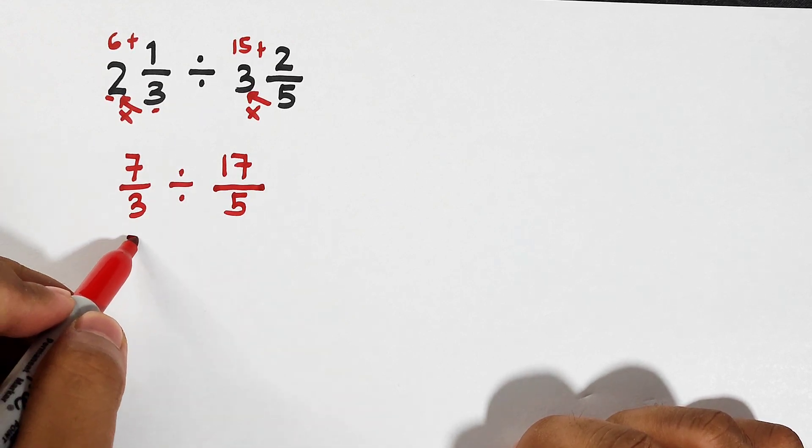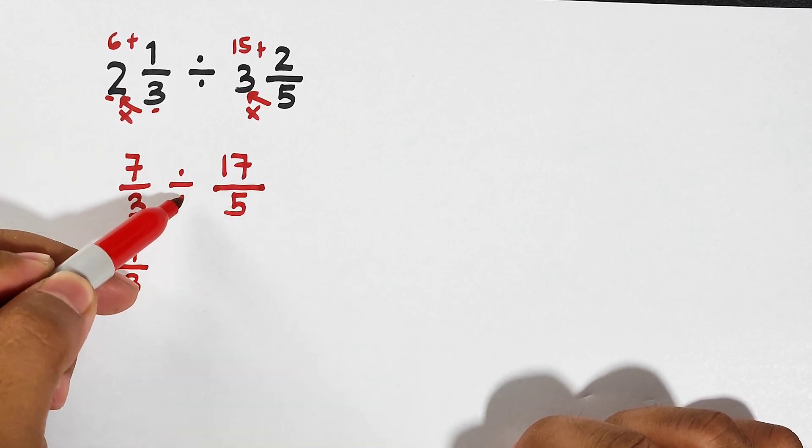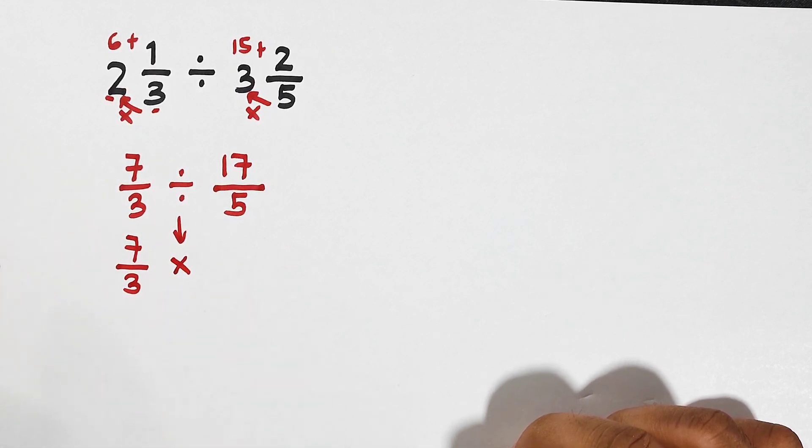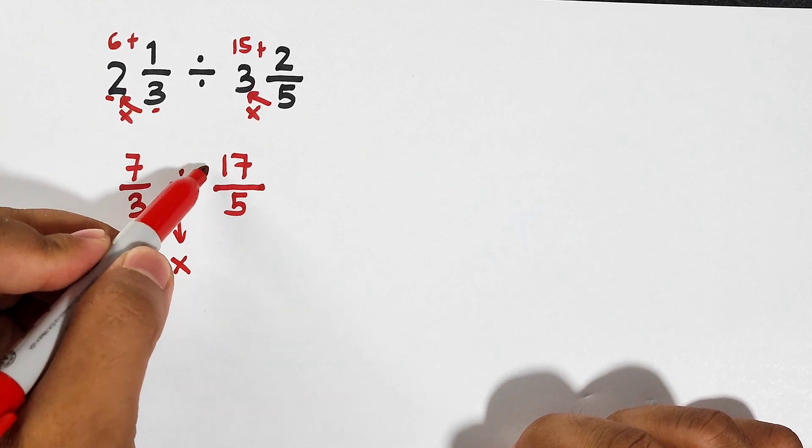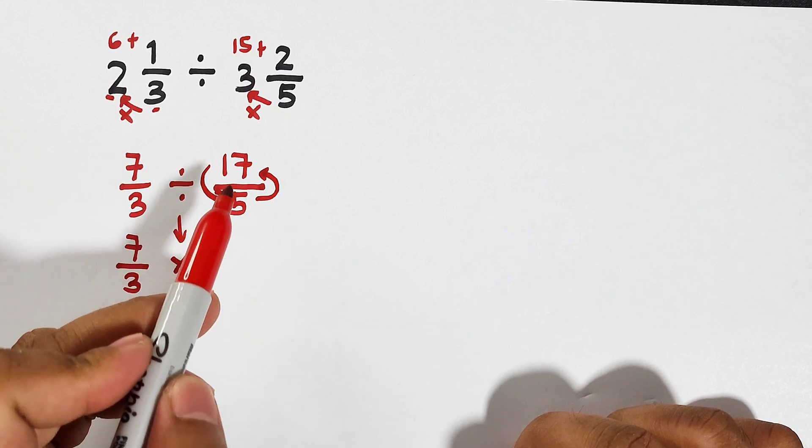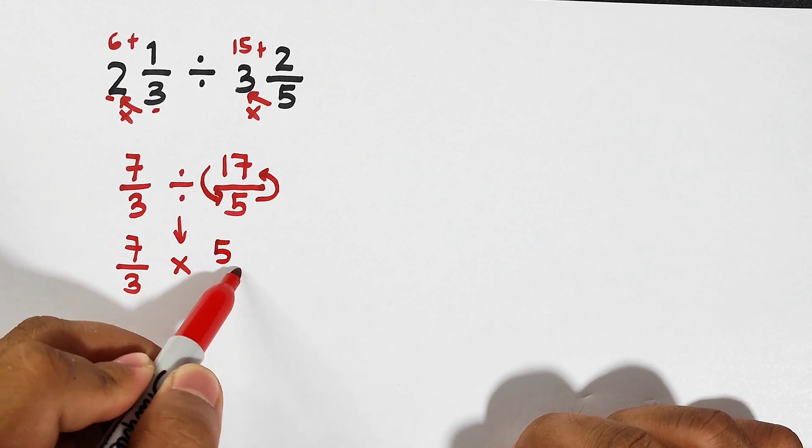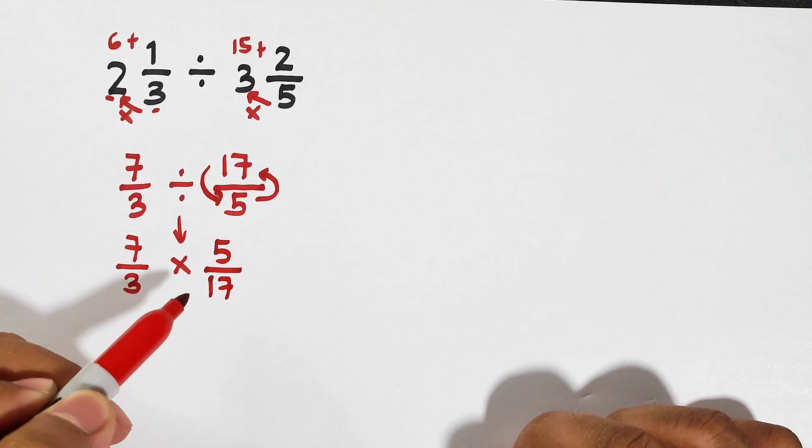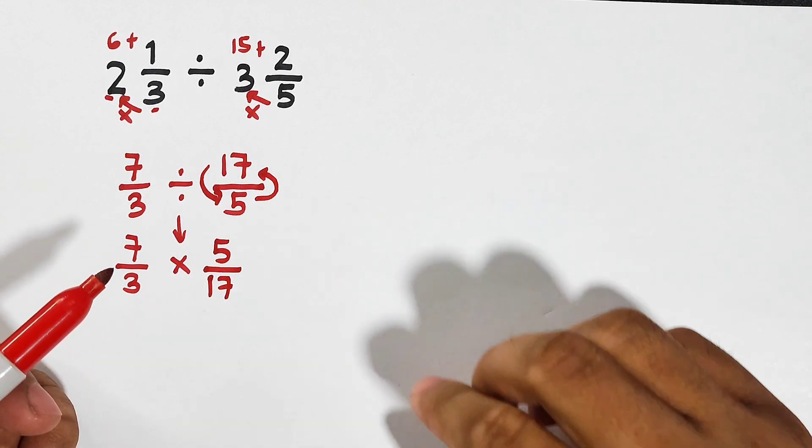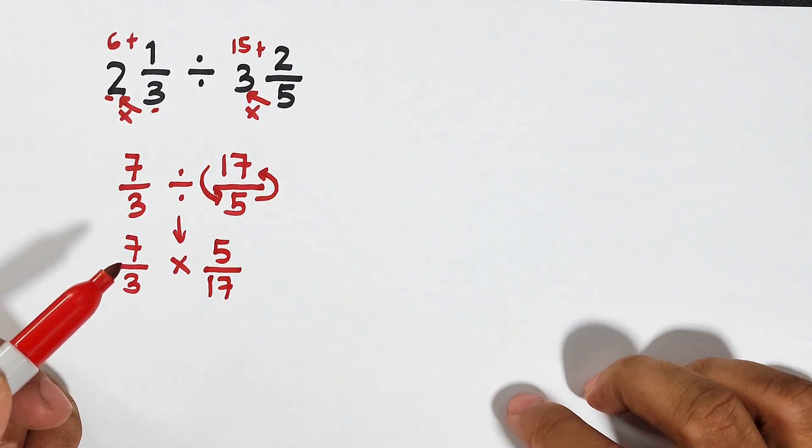Copy your first fraction. This operation, division, will change into multiplication. Then after changing the operation, get the reciprocal of your second fraction. If this is 17 over 5, the reciprocal is 5 over 17. What's happening here? If you're getting the reciprocal, you're interchanging the position of your denominator and numerator—your numerator into denominator.